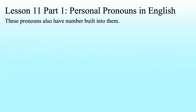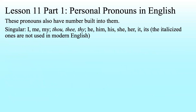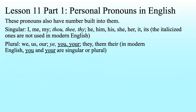These pronouns also have number built into them. For singular: I, me, and my are first person singulars; thou, thee, and thy are second person singulars — or 'you' in modern English; he, him, his, she, her, it, and its are all third person singulars. The italicized ones are not used in modern English. For plural: we, us, and our are first person plurals; ye, you, and your are second person plurals; and they, them, and their are third person plurals.